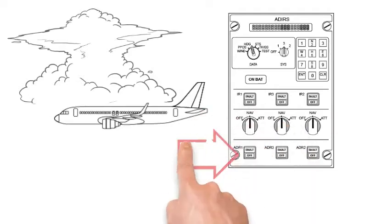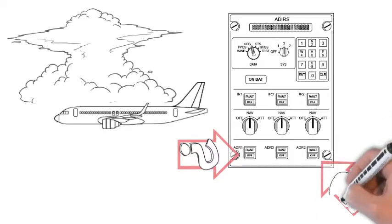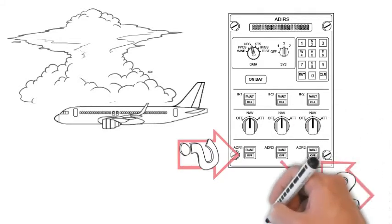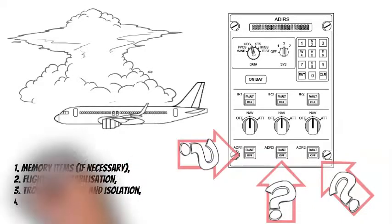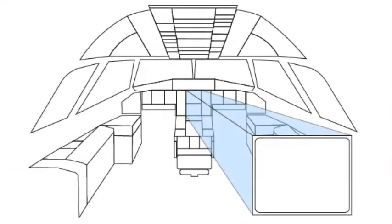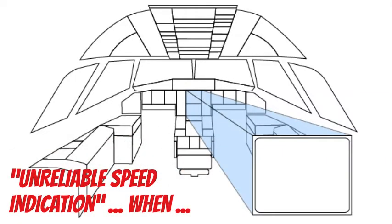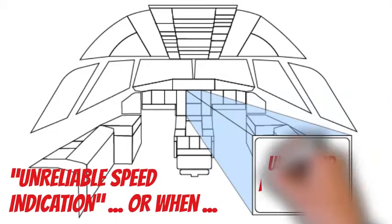The procedure includes the following steps: first, memory items if necessary; second, flight path stabilization; third, troubleshooting and isolation; and fourth, flight using pitch and thrust references or the backup speed scale, below flight level 250. If the troubleshooting has not enabled isolation of the faulty ADR or ADRs, the flight crew should consider applying the Unreliable Speed Indication procedure when the ADR check procedure 'apply' or the Unreliable Speed Procedure 'apply' action line is displayed on ECAM.